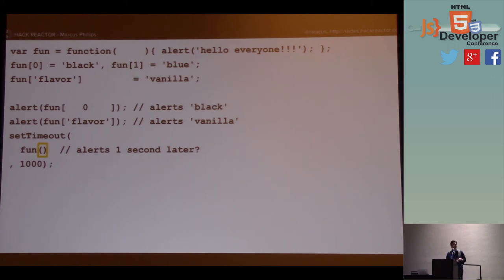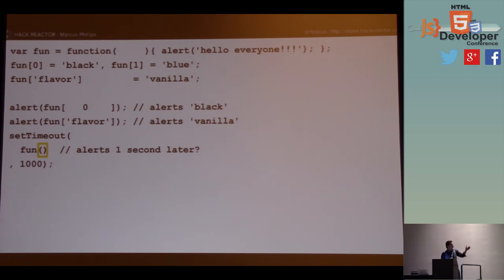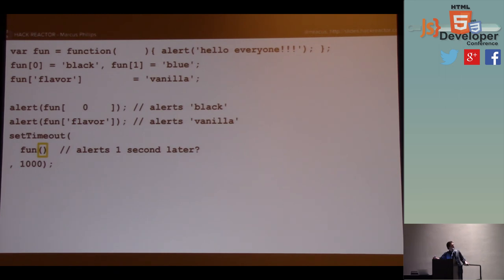We're actually passing the result of the function invocation. Functions that have no return statement in them just return undefined — it's as if you're saying 'I finished running, but it's kind of nothing.' So undefined comes back from this 'fun' invocation, and we're actually passing the value undefined to setTimeout as the first argument. If I really wanted to send 'fun' as the callback — the thing that should happen one second later — I would need to remove these parentheses. What this says is: invoke 'fun' later.